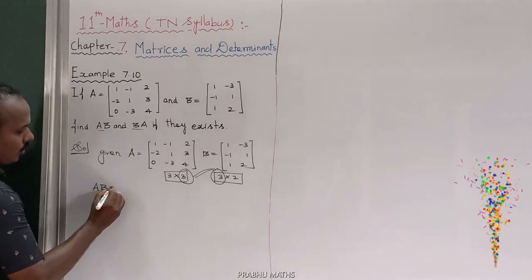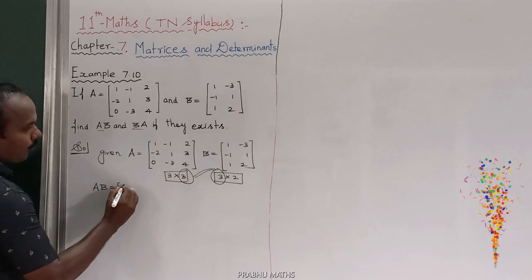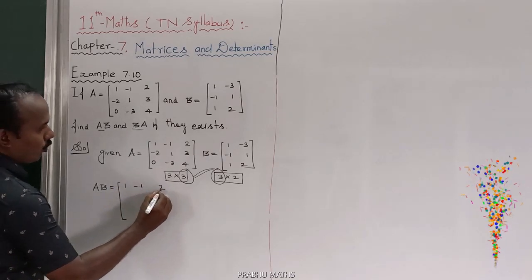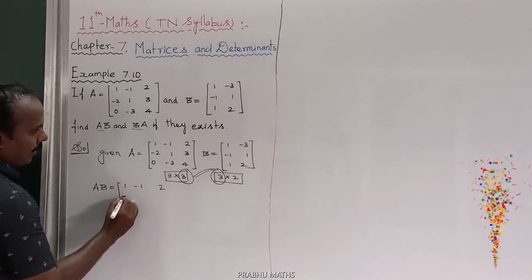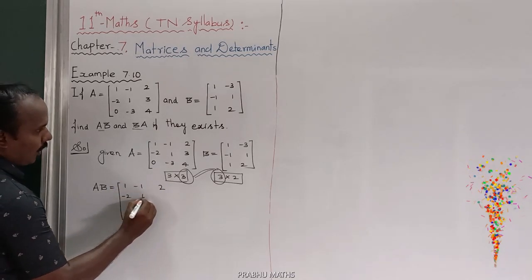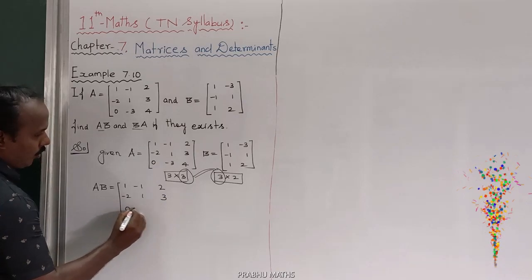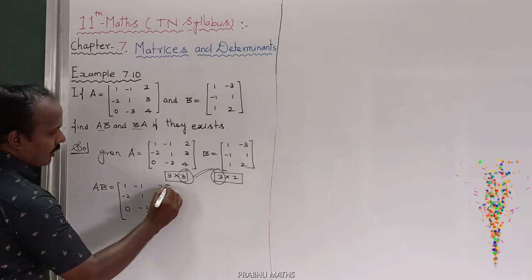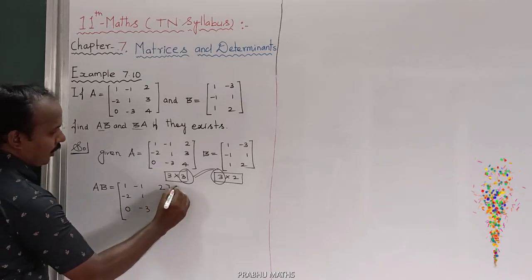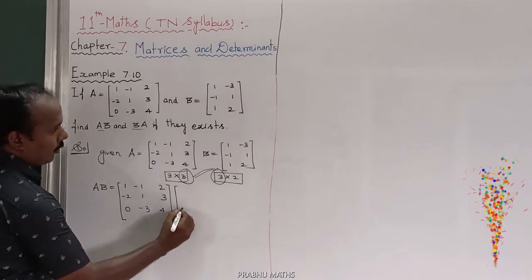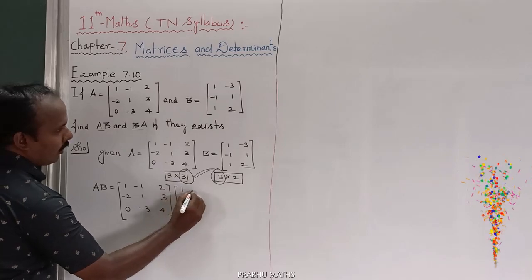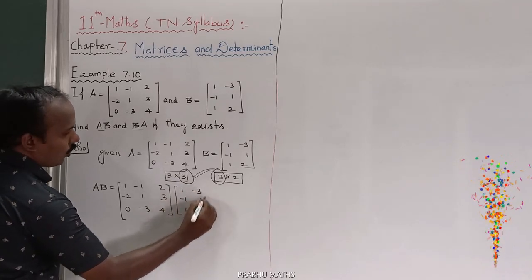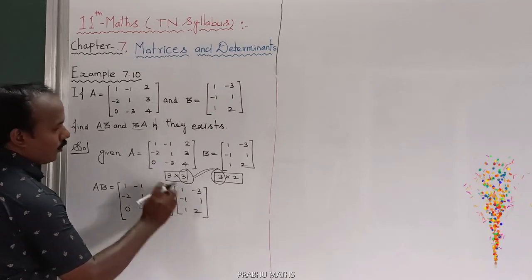The first matrix column and second matrix row should be equal — this is compulsory for multiplication to exist. So this multiplication exists, and we can find A times B. A is: 1, minus 1, 2; minus 2, 1, 3; 0, minus 3, 4. B is: 1, minus 3; minus 1, 1; 1, 2.